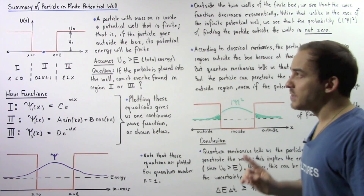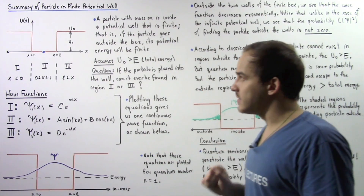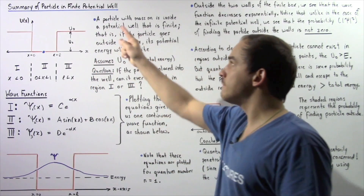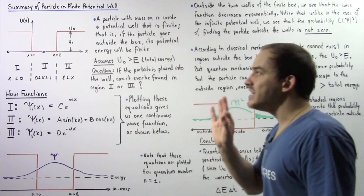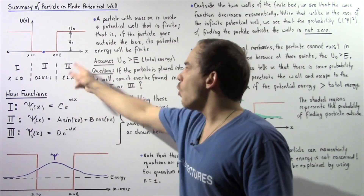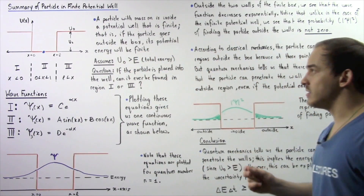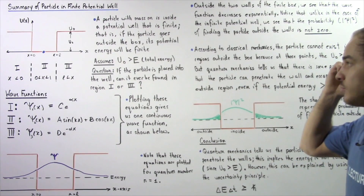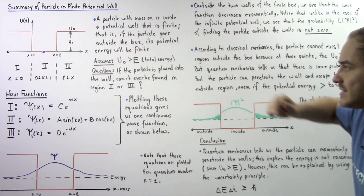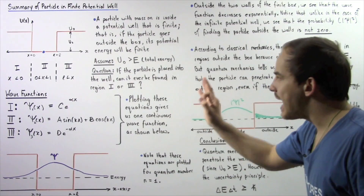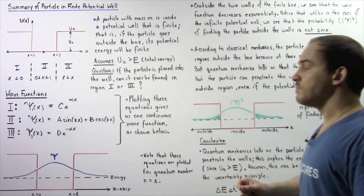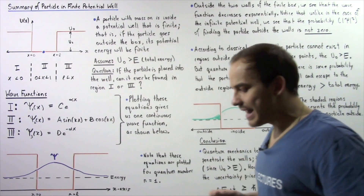If we're dealing with classical mechanics, this particle placed inside our finite potential well should not be able to make it outside to region one or region three. So the question we want to explore is: if the particle is placed into the well, can it ever be found in region one or region three according to quantum mechanics?